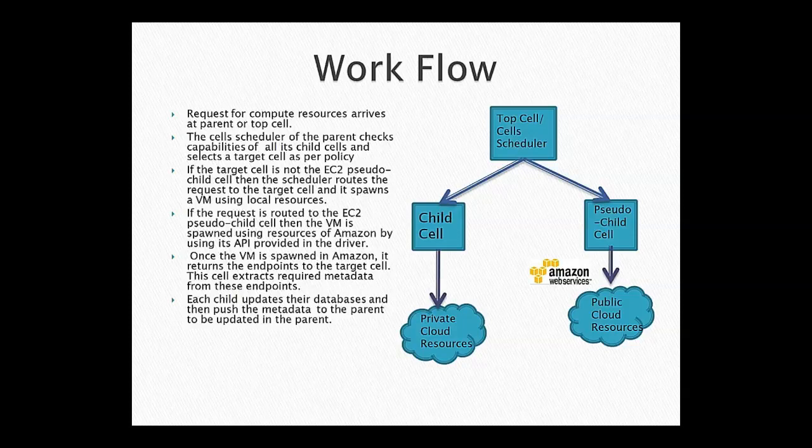This diagram shows how simple the flow is, and it illustrates many of the advantages of our approach. For example, we didn't have to invent a scheduler to decide whether to create a VM on Amazon or on OpenStack. Because we are mapping Amazon into a child cell, we already have a scheduler — the cell scheduler does the job. Another question is if at a later date you want to make a policy-based decision based on statistics like how many VMs you have in Amazon. If we had taken a different approach, we might have had to invent new infrastructure for all of this.